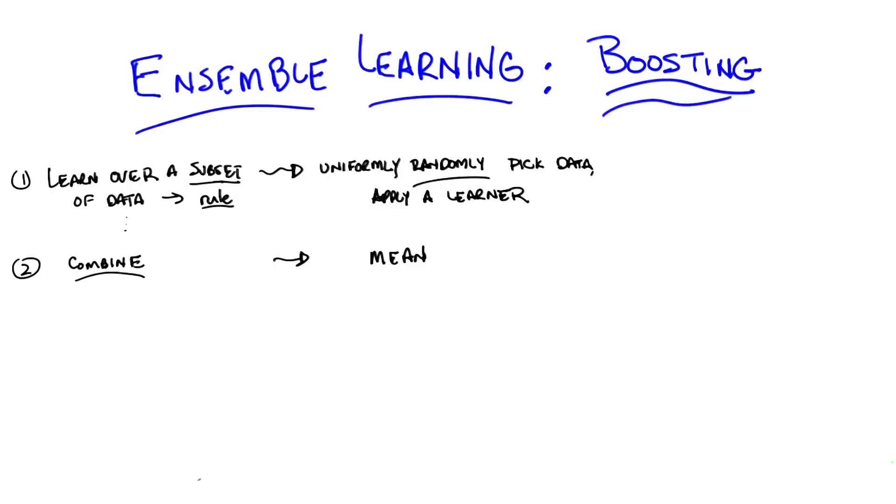Let's go back and look at our two questions we were trying to answer. We've answered the first one: learn over a subset of data to find a rule by choosing that subset uniformly randomly and applying some learning algorithm. And we answered the second question, how do you combine all of those rules of thumb, by saying you simply average them. That gave us bagging.